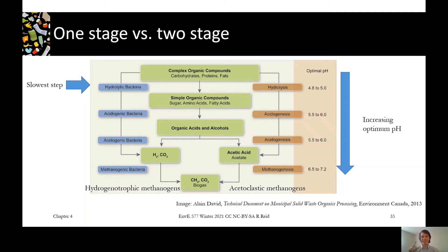The names are really close. The next step after acidogenesis is converting all that stuff into acetate, which is one of the universal energy molecules in a living organism. So we have acidogens during acidogenesis and then acetogens during acetogenesis.